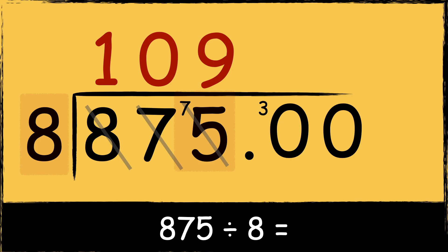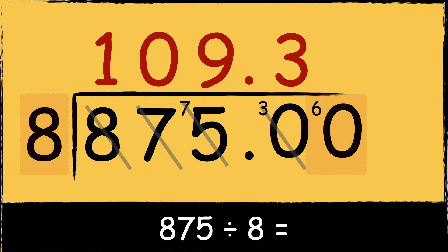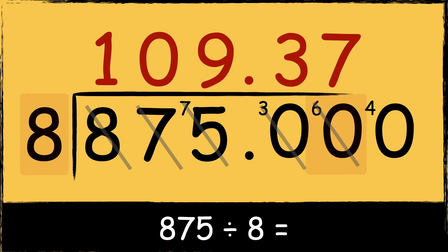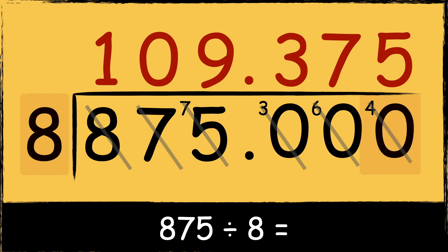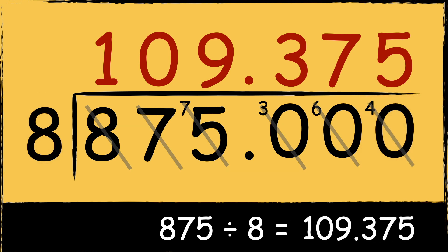Eight goes into seventy-five nine times with three left over. We're now working after the decimal point so we need a decimal point in the answer. Eight goes into thirty three times with six left over. Eight goes into sixty seven times with four left over. As we still have four left over, we need to place another zero. Eight goes into forty five times with nothing left over, so the answer is 109.375.